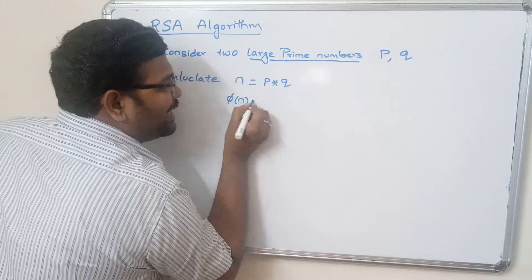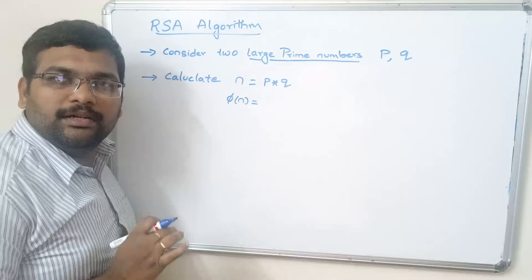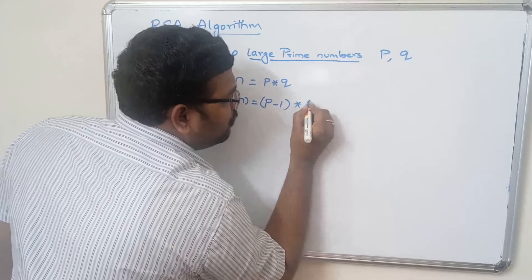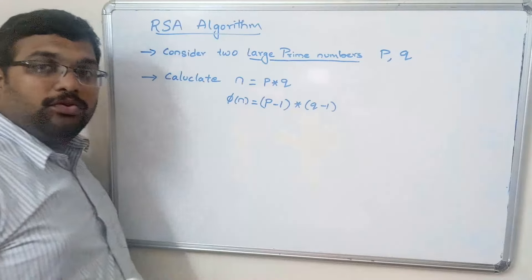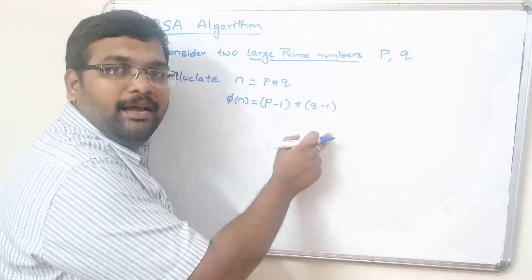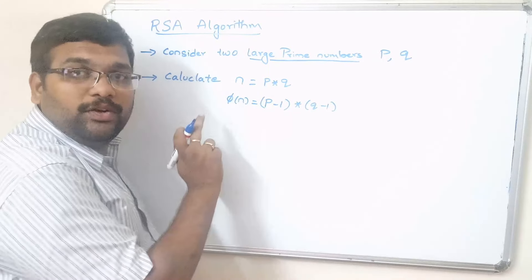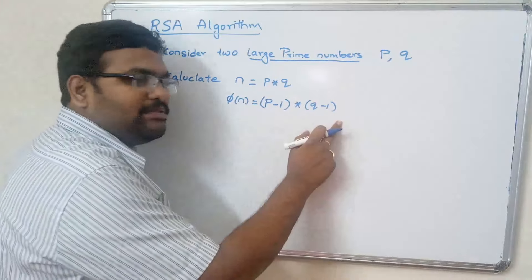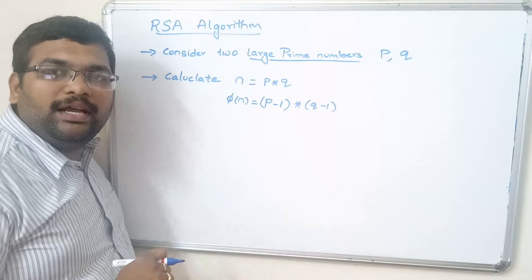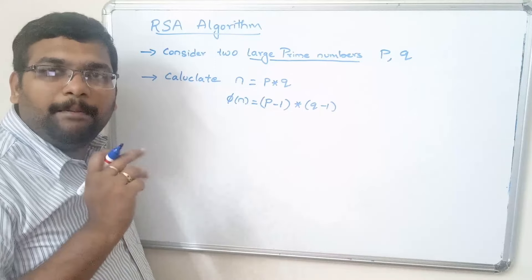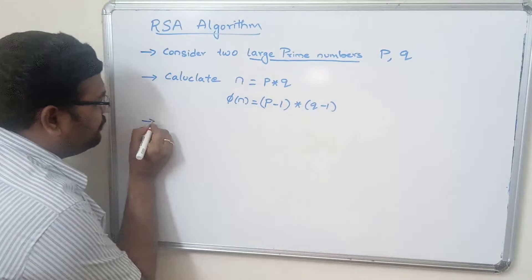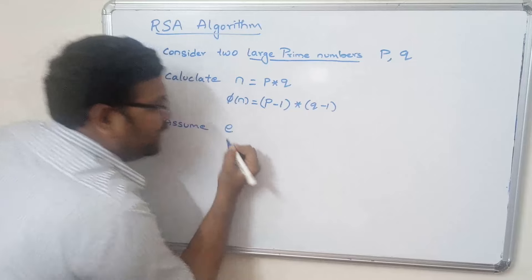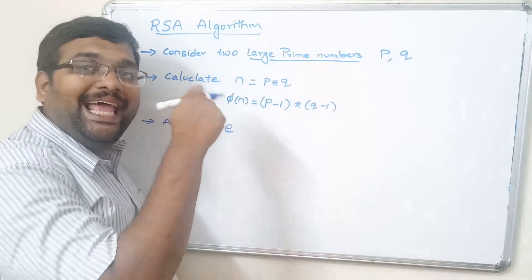Next, calculate phi of n — that is Euler's totient function — which equals (p minus 1) multiplied by (q minus 1). I will explain Euler's totient function once I have finished writing the RSA algorithm. After calculating n and phi of n, we now have to determine the public key and the private key. The public key, which we call e, is used at the encryption side.